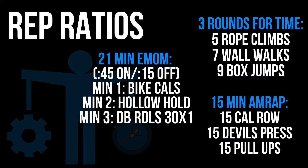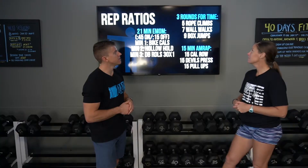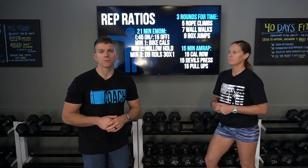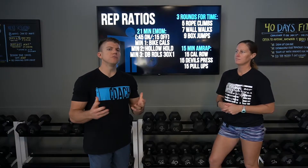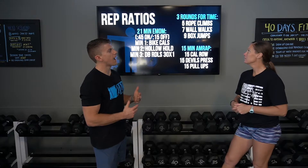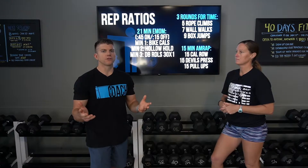Let's go to the top right corner — three rounds for time: five rope climbs, seven wall walks, nine box jumps. We did not put a height on the box, and this is where a nuance can make a big difference. Looking at rope climbs versus wall walks — I think the wall walks are harder for me, but I can easily see athletes struggling more with the rope. Both of those movements are going to take about two to three minutes per round for the average person in our gym.